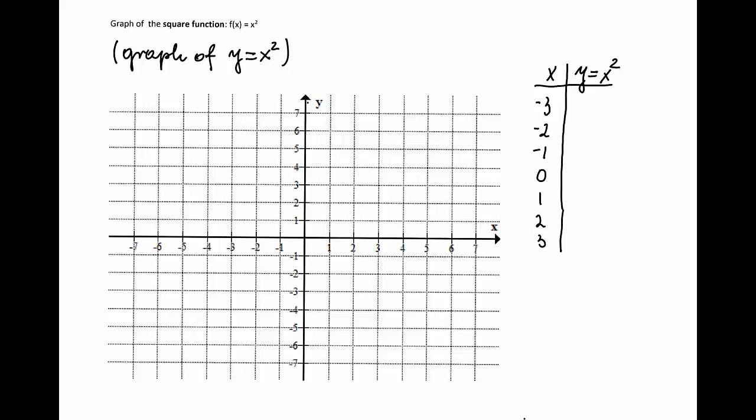I will compute corresponding values of y. So this is negative 3 squared, which is 9, negative 2 squared which gives me 4, and so on. So I will get values 1, 0, 1, 4, and 9.